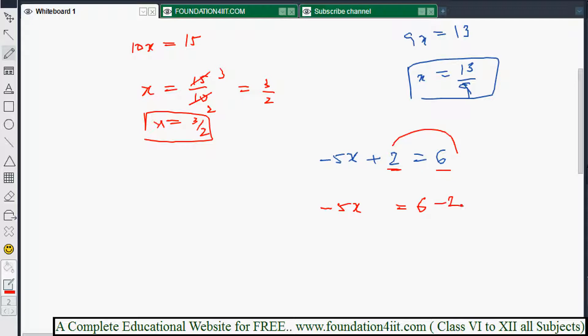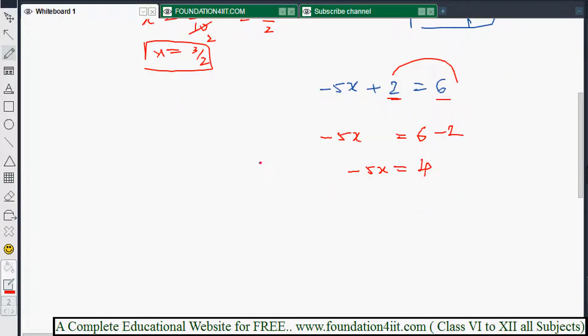The next step is to simplify: 6 minus 2 is 4, and this is minus 5x. Minus 5x is nothing but minus 5 times x - if there's no symbol, it's multiplication in algebra.